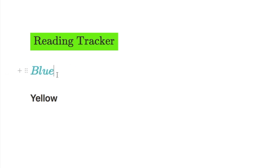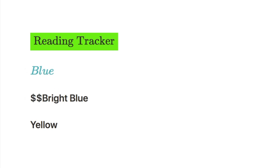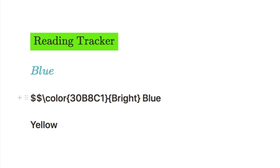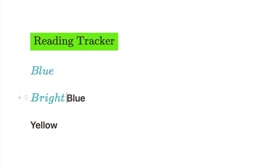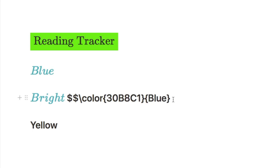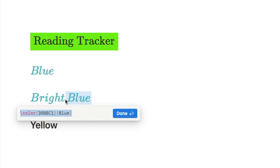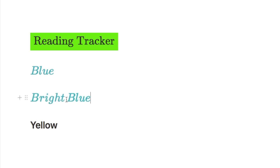To get multiple words to appear correctly, apply the equation to each word individually. For example, for 'Bright Blue', add the equation for the word 'Bright', add the two dollar signs to convert it, leave a manual space, then do the same equation again for the word 'Blue'. As you can see, it converts correctly — you just have to do each word individually with a space between them.